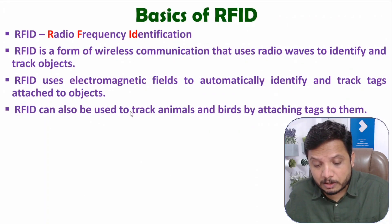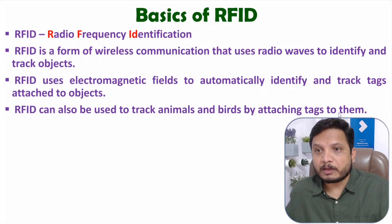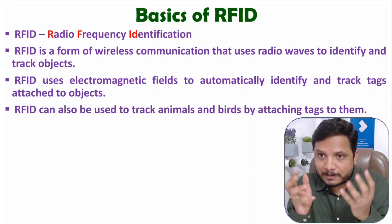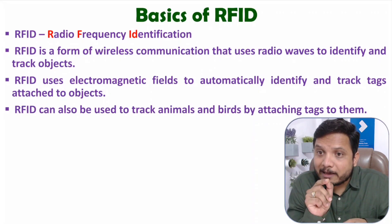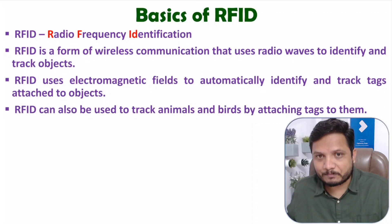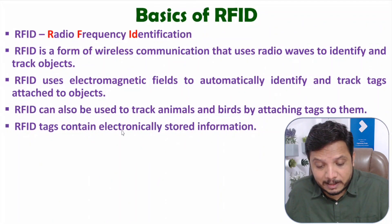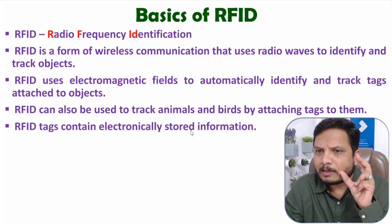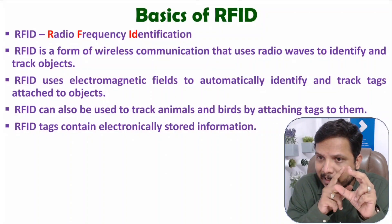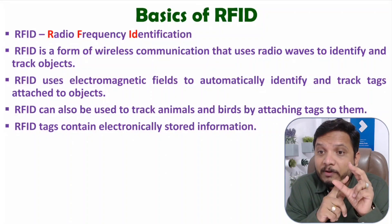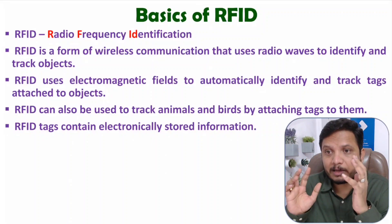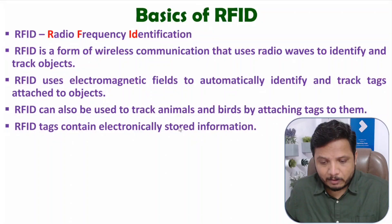RFID can also be used to track animals and birds by attaching a tag to them. You can easily insert RFID tags in the body of animals. If you want to track the animals, you just need to insert the tag inside that animal, then you can identify and track that animal from anywhere. An RFID tag contains electronically stored information. Inside the tag there will be a microchip as well as an antenna. Inside the chip there will be some information which will give identification of the object, and with the use of the antenna it can communicate with an RFID reader.